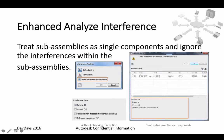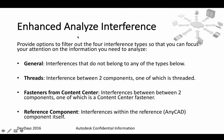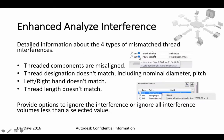Enhanced analyze interference: one of the new options available is 'treat sub-assemblies as components.' If you only want to analyze the interference between assemblies but not between components inside the various sub-assemblies, you can take advantage of this. Additionally, the analysis can identify whether interference is general, thread-related, from fasteners from a content center, or between reference components.